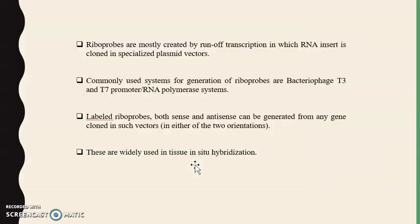Radiolabeled RNA probes, known as riboprobes, are mostly created by runoff transcription, in which the RNA insert is cloned in a specialized plasmid vector. Bacteriophage T3 and T7 promoters and RNA polymerase systems can also be used; both sense and antisense probes can be generated from any gene cloned in such vectors. These are widely used in tissue in situ hybridization techniques.